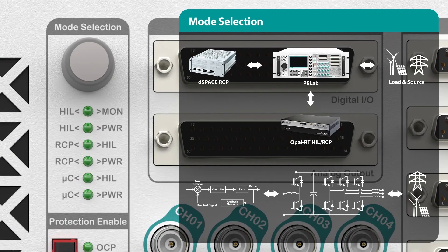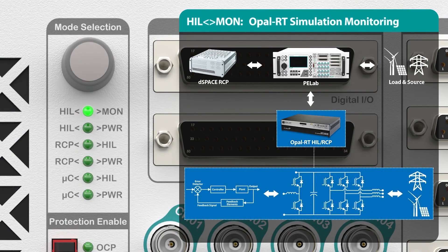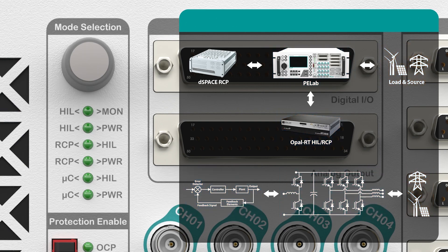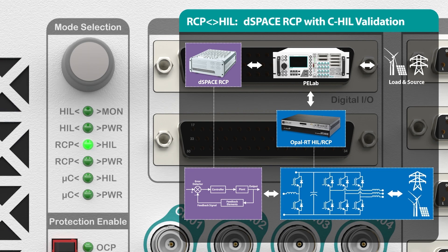The PE Lab modes make your research cycle as efficient as possible. First, you will simulate the control system and power electronics topology in the OpelRT real-time simulator, while PE Lab can be used for monitoring. Once you verify the whole system in simulation, the OpelRT simulator can rapidly prototype the control system and test it with actual power electronics hardware inside the PE Lab. Alternatively, you can use D-Space RCP to prototype the control system.